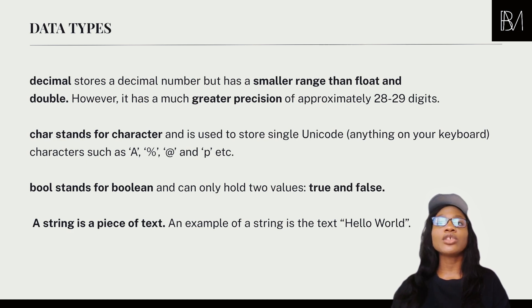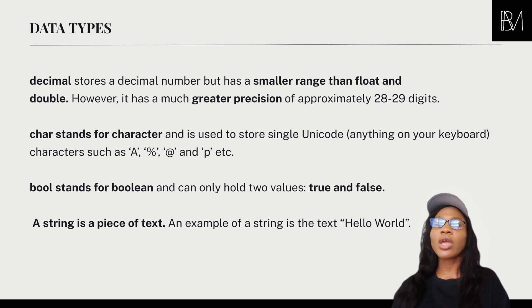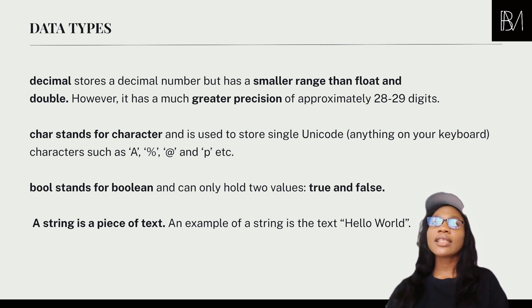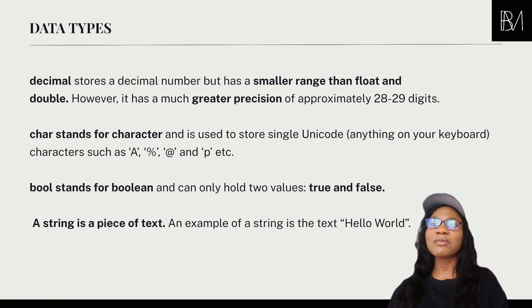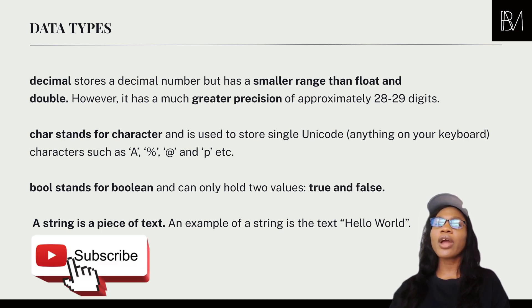The boolean is a very interesting data type because it can only hold two values: true or false. If you think about a Revit program where you want to determine whether a window should be hosted on a wall — if there is an active wall, allow the person to host the window; else, if the wall is false, return a message saying there is nowhere to host a window. What I've just described is known as an if-else statement, which we'll look at in the next video.